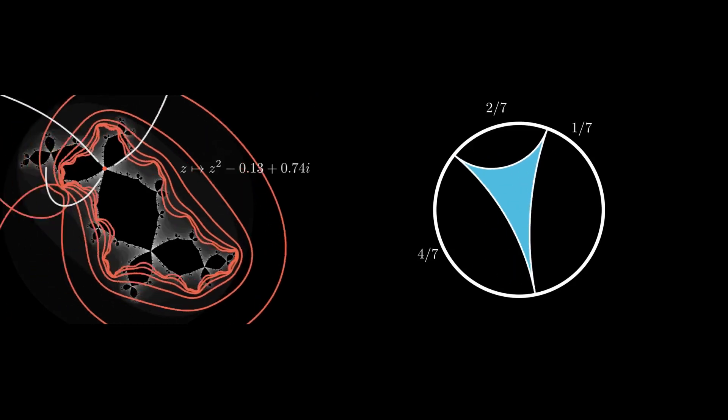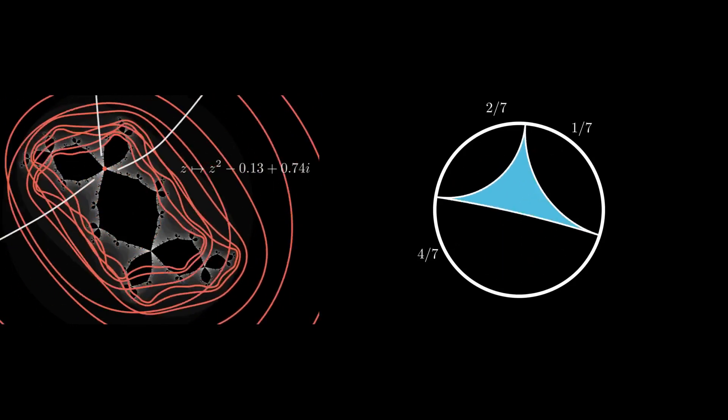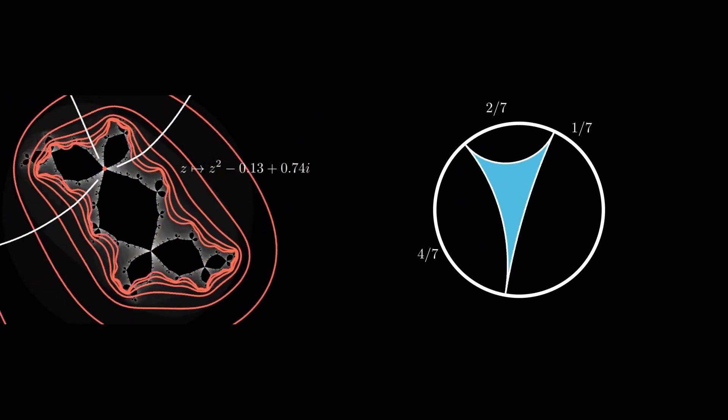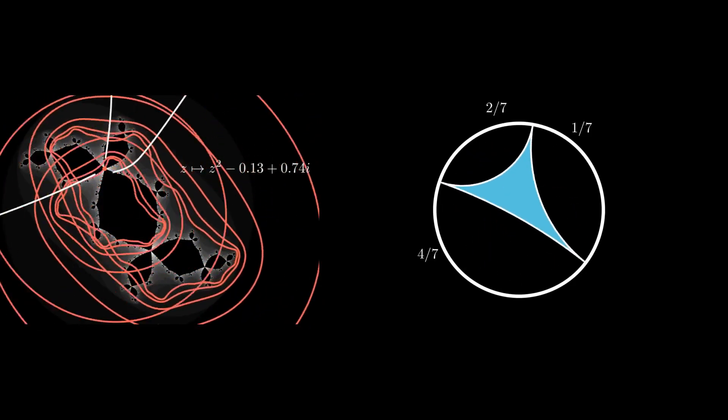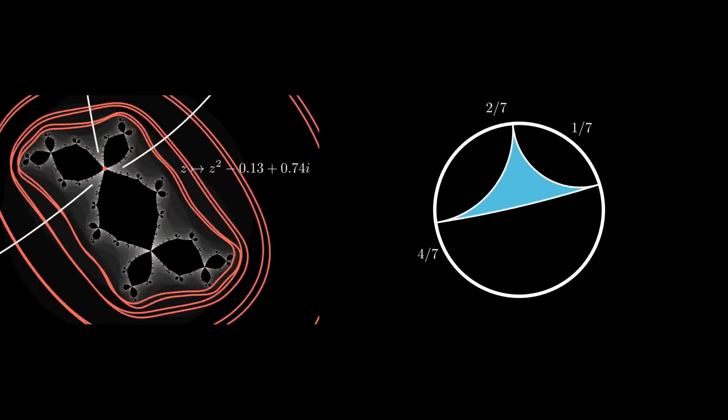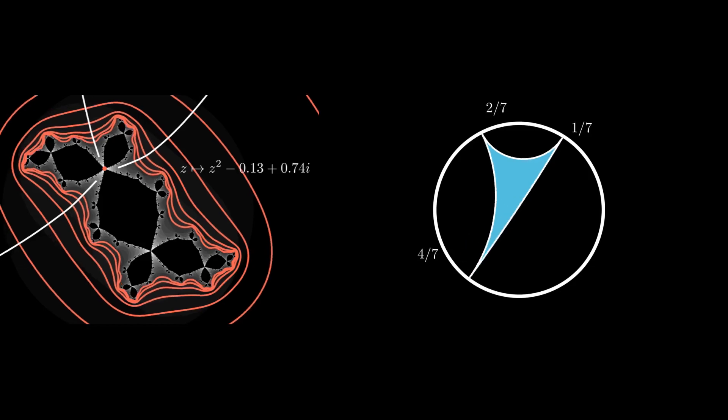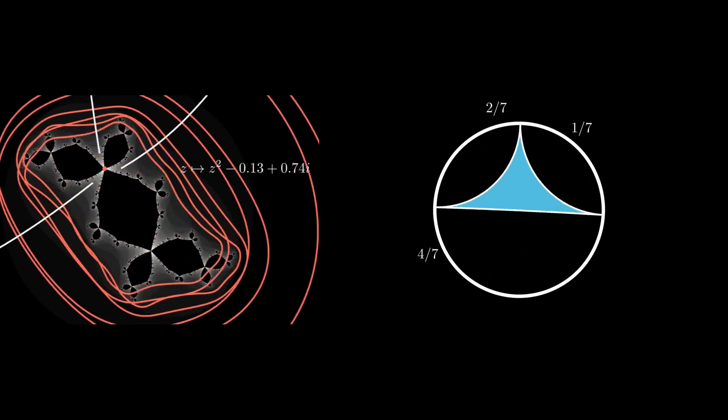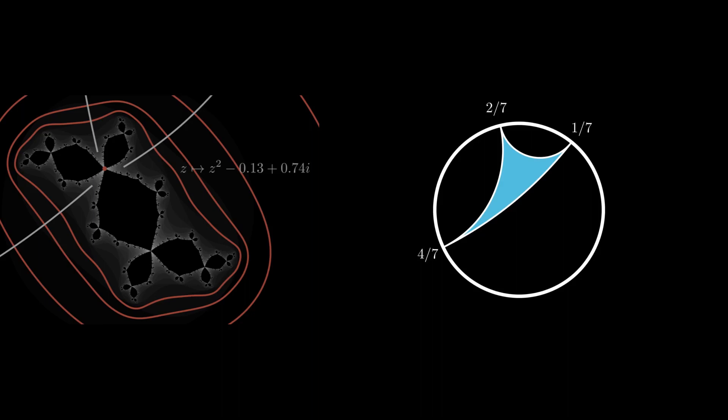We've created a triangle with period 3 vertices under z squared, which is the beginning of our lamination. This triangle with period 3 vertices models the dynamics of the fixed point of the Julia set with period 3 external rays. We hope this is a helpful illustration of what a quotient is for the uninitiated.